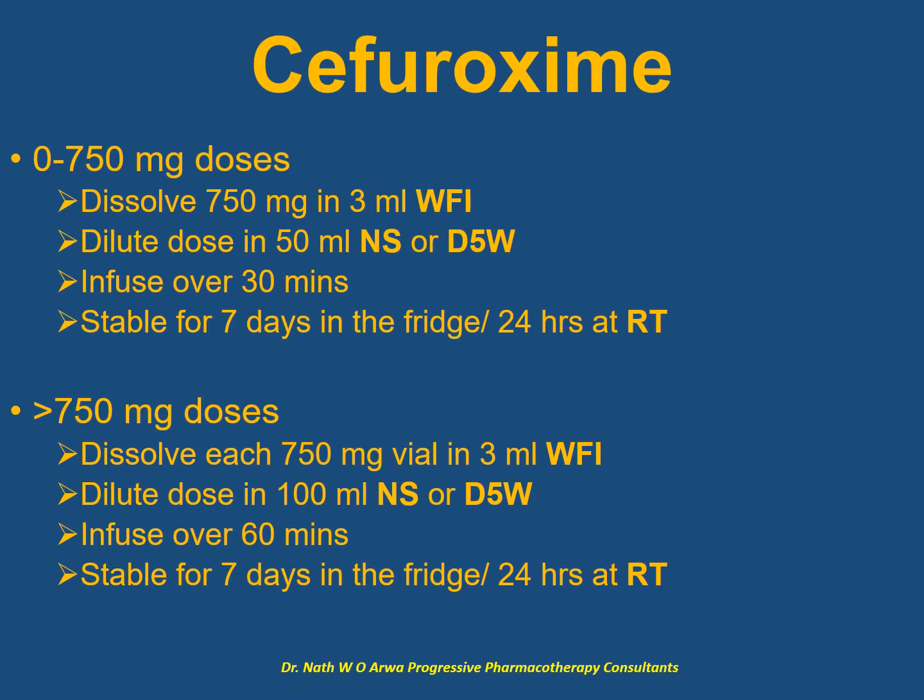For the next product, for doses of up to 750 mg, dissolve the 750 mg vial in 3 ml of water for injection prior to dilution in 50 ml of compatible IV fluid and infuse over 30 minutes. Such IV solutions remain stable for 7 days in the fridge or 24 hours at room temperature. For doses above 750 mg, dissolve each 750 mg vial in 3 ml of water for injection, dilute the final dose in 100 ml of compatible IV fluid, and infuse over an hour. Stability is one week in the fridge or one day at room temperature.